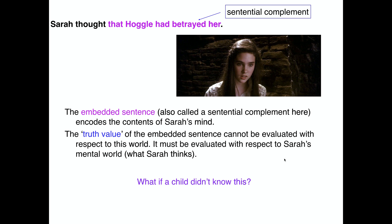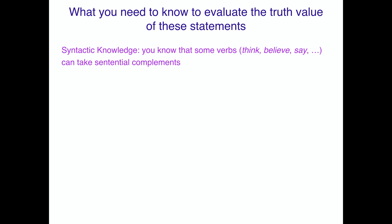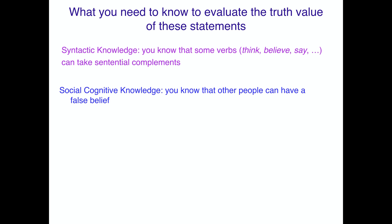So the question is: what if a child didn't know this? This is a particular syntactic construction with a very specific conceptual structure associated with it — we're talking about mental states of other people. What you need to know to evaluate the truth value of statements involving a mental state verb like 'think' and a sentential complement includes syntactic knowledge: that some verbs like 'think,' 'believe,' and even 'say' can take sentential complements — a sentence as an object.